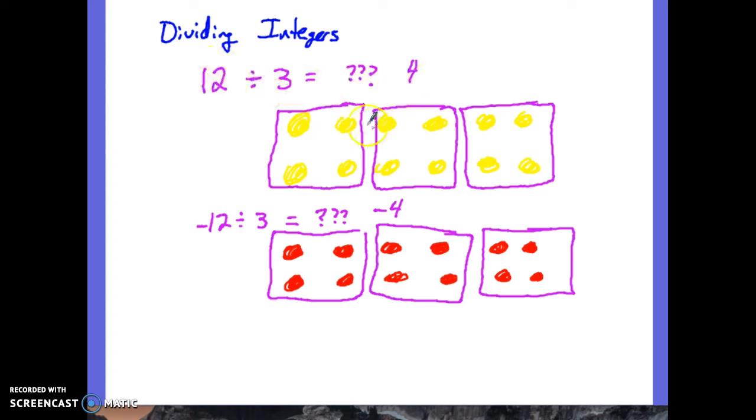Really all that's changed is when I had a positive 12 divided by 3, I get four positives in each. When I have a negative 12 divided by 3, I get a negative 4 in each. Let's do one more to make sure that we see the full pattern. If I do a nice simple problem like six divided by two, there's six positives. I'm dividing into two even groups, so looks like I can put three in each group. I get three.